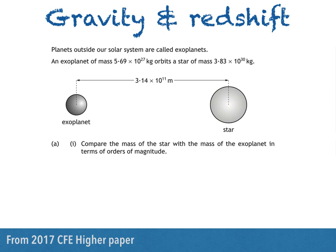Planets outside our solar system are called exoplanets. An exoplanet of mass 5.69 times 10 to the power of 27 kilograms orbits a star of mass 3.83 times 10 to the power of 30 kilograms. Part A1 asks us to compare the mass of the star with the mass of the exoplanet in terms of orders of magnitude.